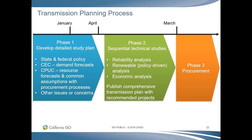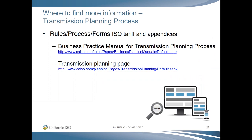The transmission planning process has two phases for project definition and evaluation, and if needed, we hold a competitive solicitation for selected projects. In Phase 1, we are developing forward-looking assumptions. In Phase 2, we are performing analysis and identifying transmission needs. If approved by the ISO board, in Phase 3 we select proposals to build needed transmission projects. The ISO works closely with the public utilities and energy commissions in this process.